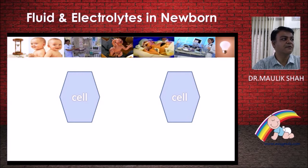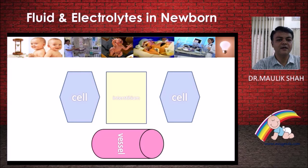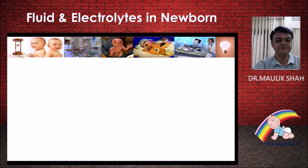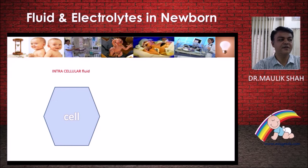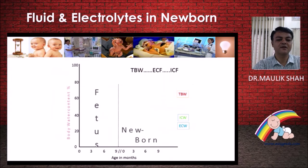First, let us understand the basic compartments of fluids in the body. The body is made up of cells, so the fluid within the cell is known as intracellular fluid. There are also vessels and the interstitium. Fluid in the interstitium and vessel together — outside the cell — is known as extracellular fluid, comprising interstitial fluid and intravascular fluid.